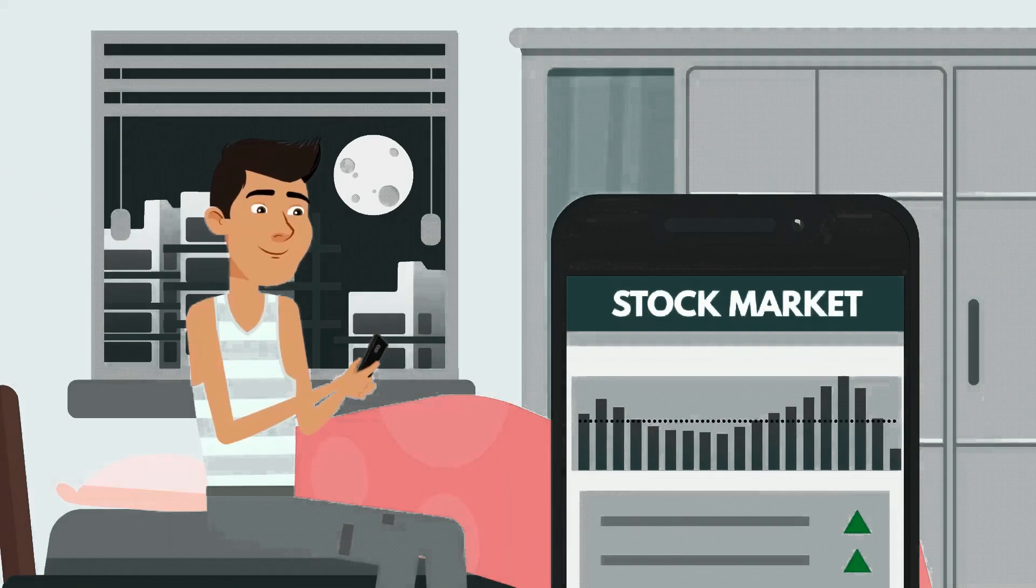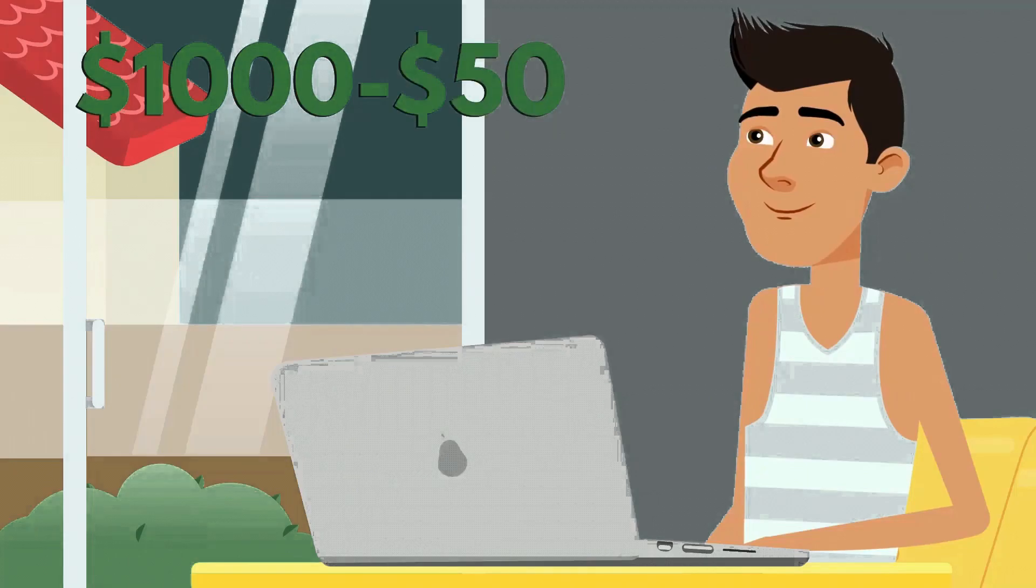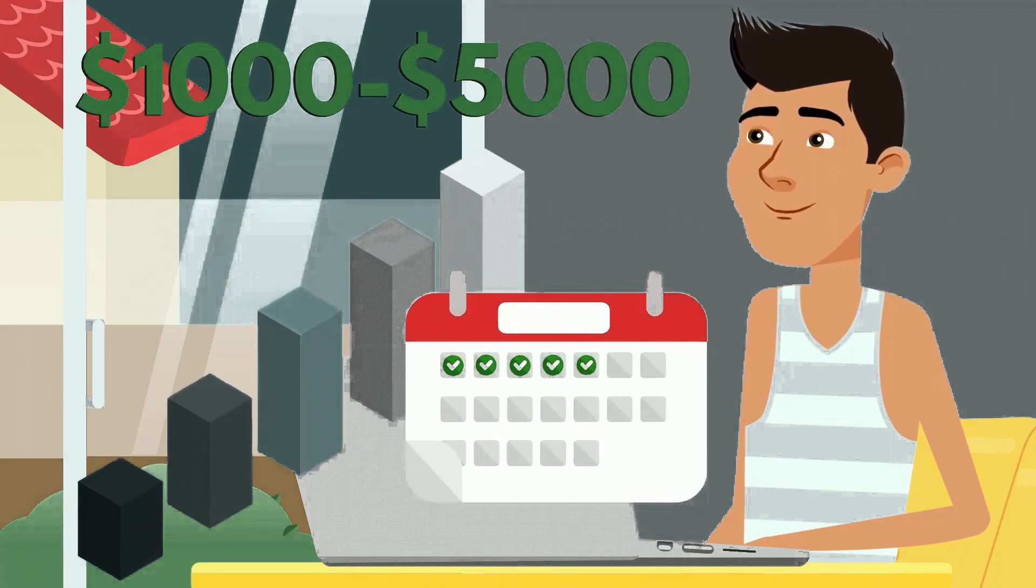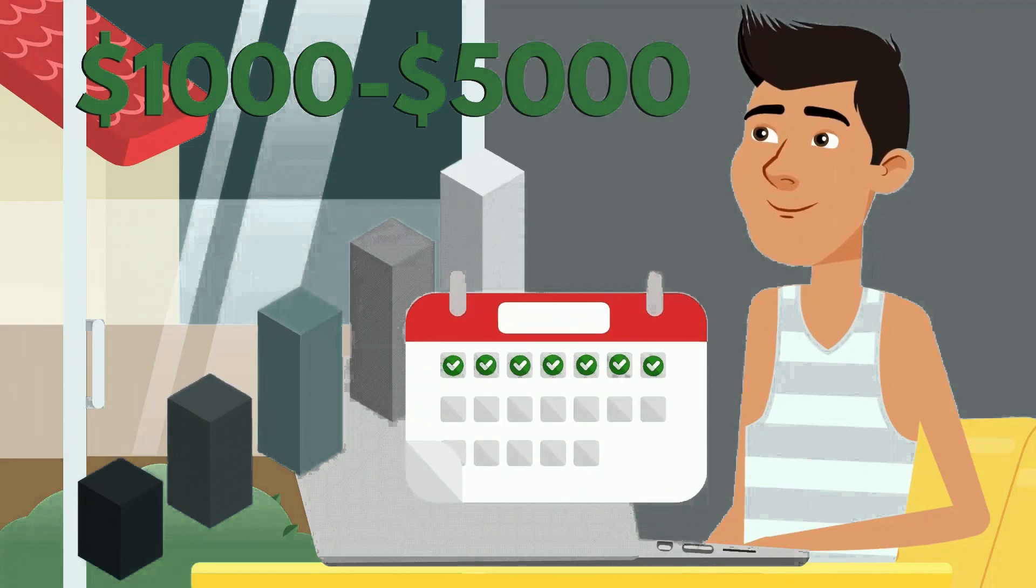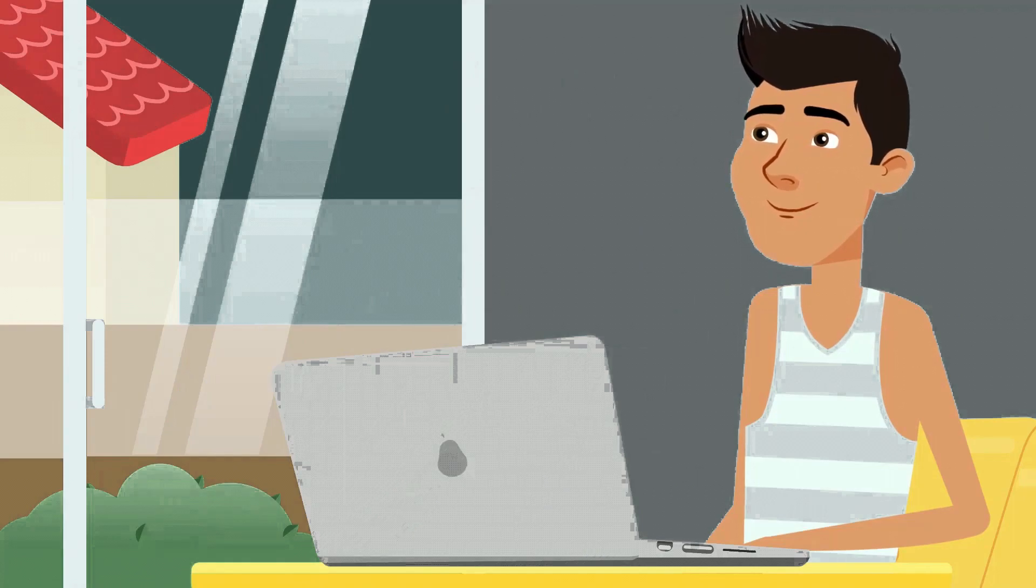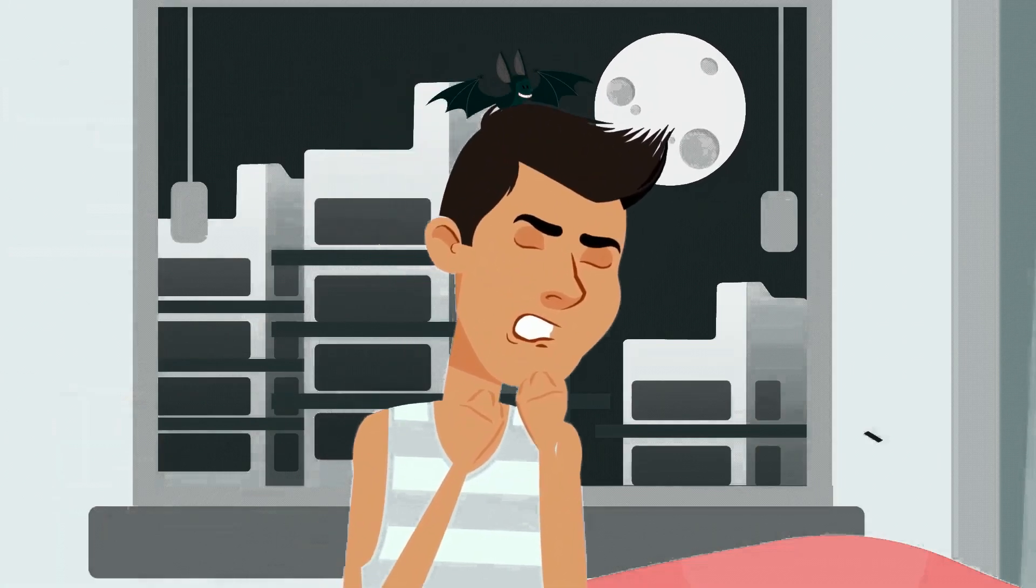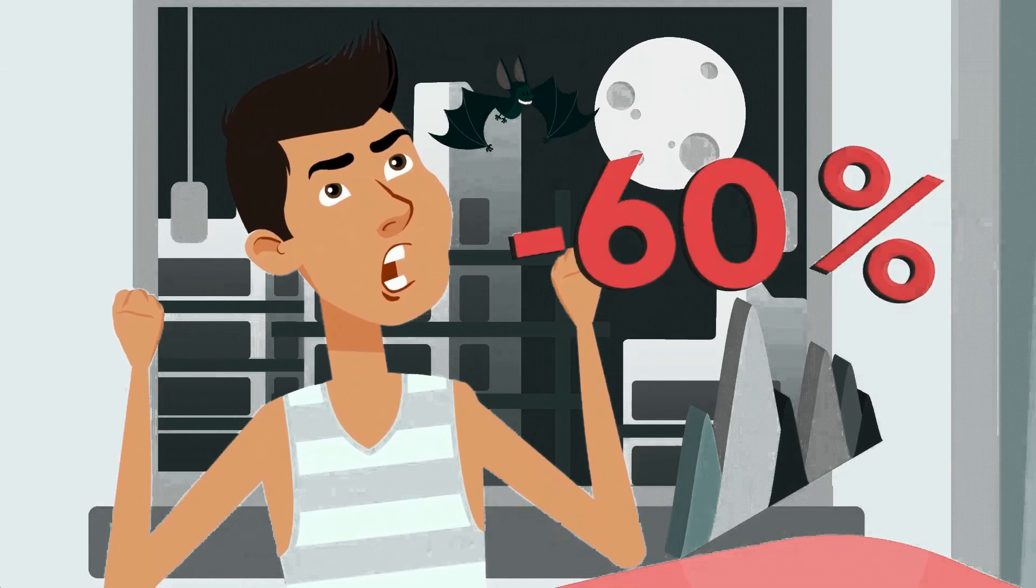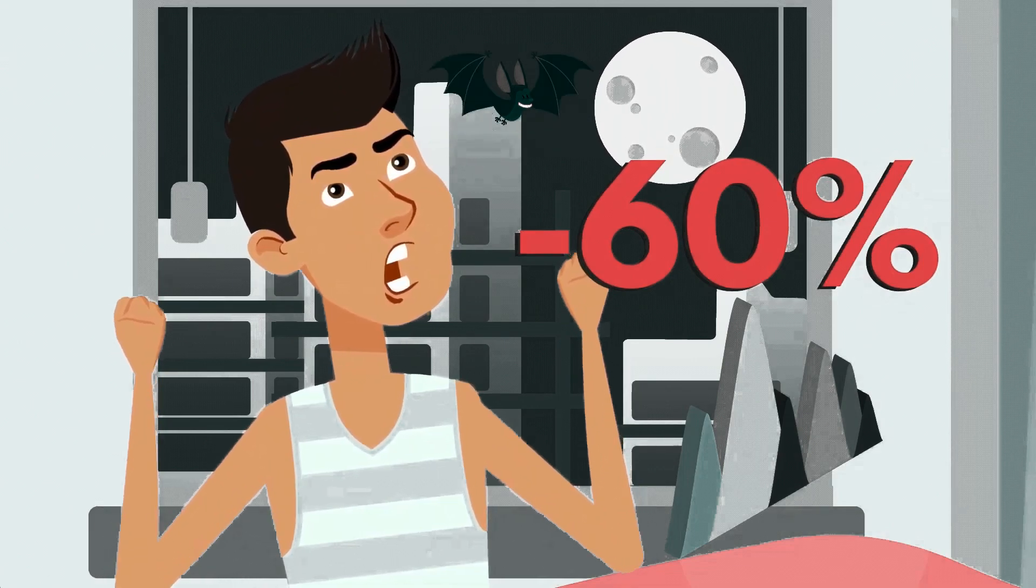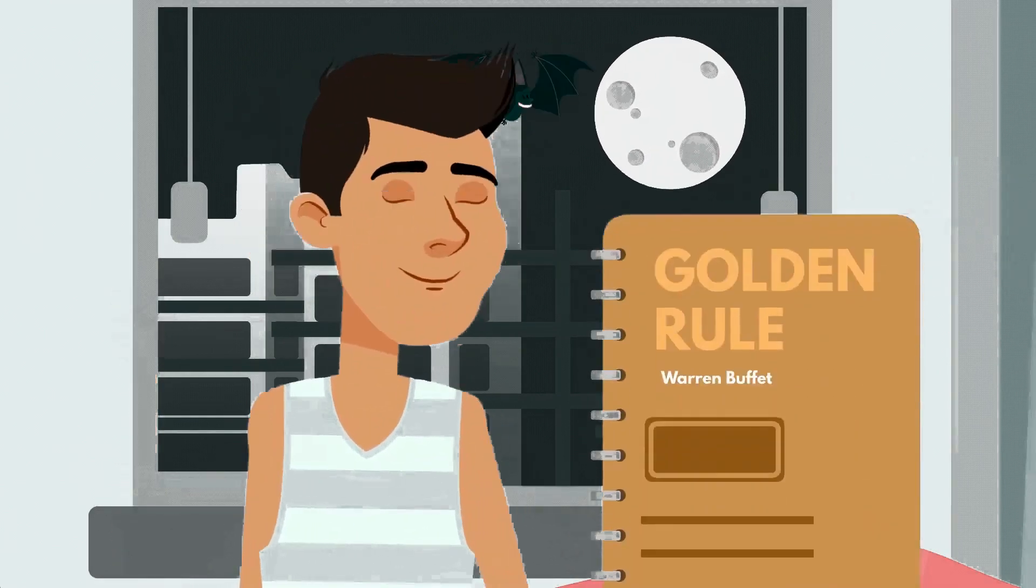As we draw the curtains on Tom's remarkable story, let's revisit the key principles that were the cornerstone of his success. Tom's journey was underpinned by the timeless teachings of the intelligent investor, which he meticulously applied and adapted to his circumstances. His story exemplifies the power of value investing, the importance of patience, and the necessity of discipline in the world of finance. Tom always emphasized the significance of starting early and staying committed to your investment goals. He showed us that it's not about the amount of money you start with, but about consistently applying smart investment strategies over time. His journey from $100 to $100 million is a testament to the magic of compounding and the long-term growth potential of well-chosen investments.